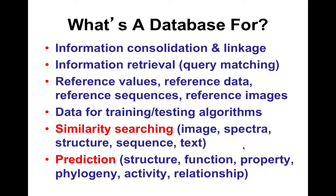Likewise, similarity searching. We do this all the time when looking on Google — it has automatic spell checks and image searches that find things close and exact to what you wanted. So we can search by image, spectra, structure, and sequence.